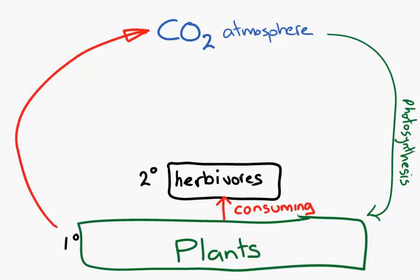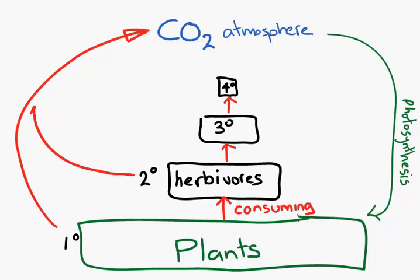After our herbivores, we're going to have our third trophic level consumer — carnivores, maybe a fourth trophic level. We're going to have eating going up. Each of these levels is going to be doing respiration as well, releasing carbon back into the atmosphere.